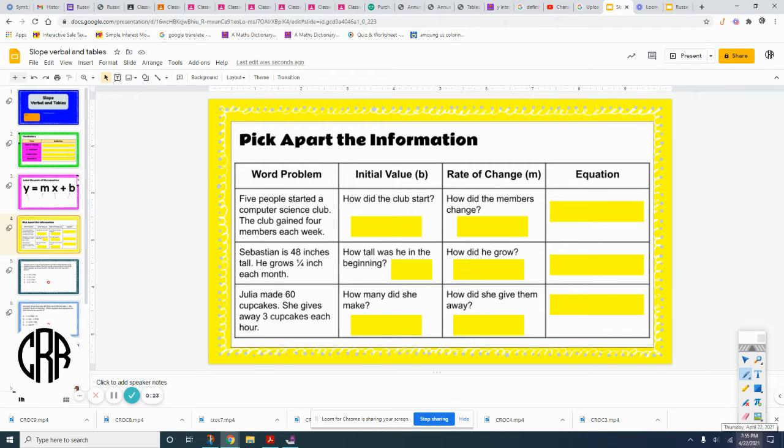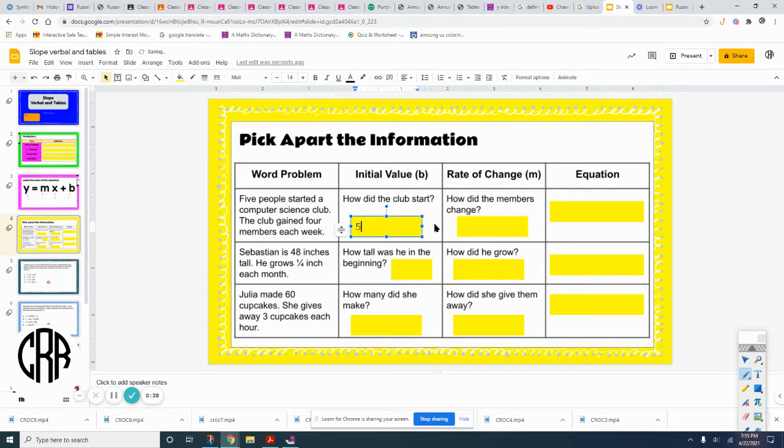So word problem: five people started a computer science club. The club gained four members each week. How many people - what was the initial start of the science club? Right here, five people, so we're going to write five. And then how did it change each week? They gained four members each week, so we're going to do four members each week.